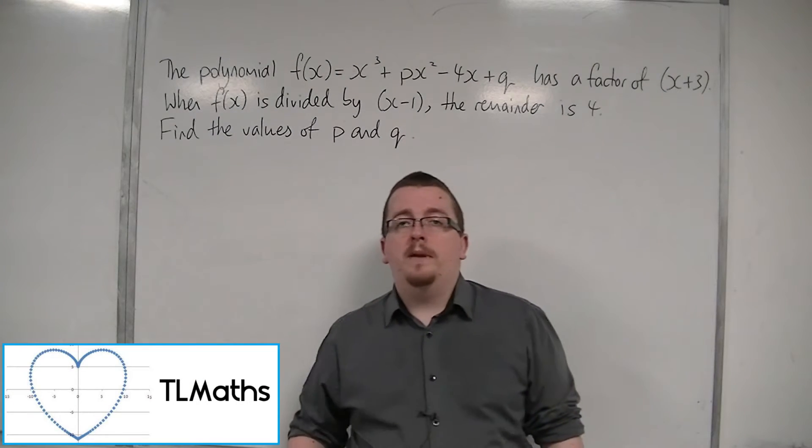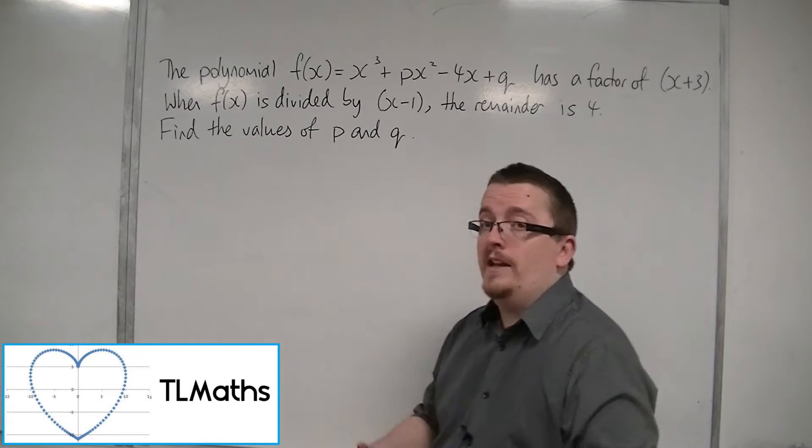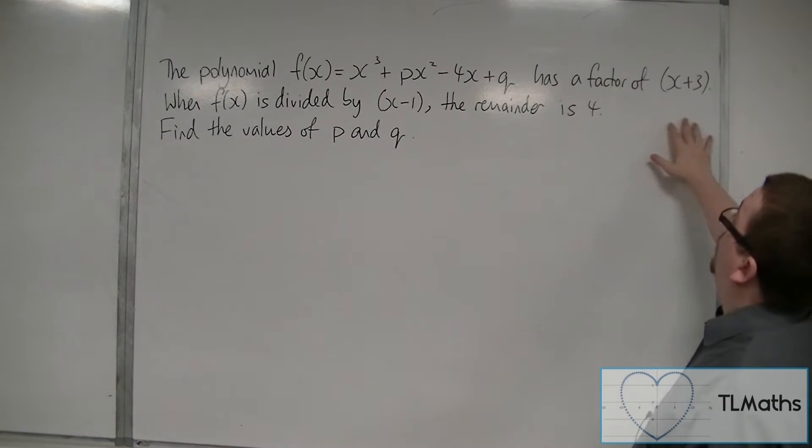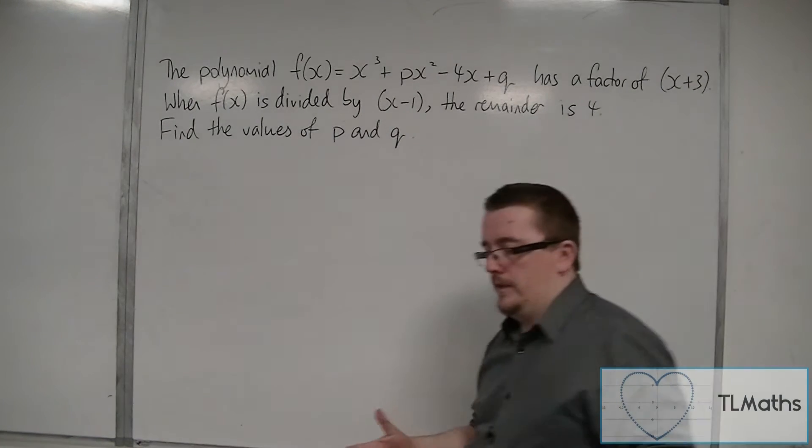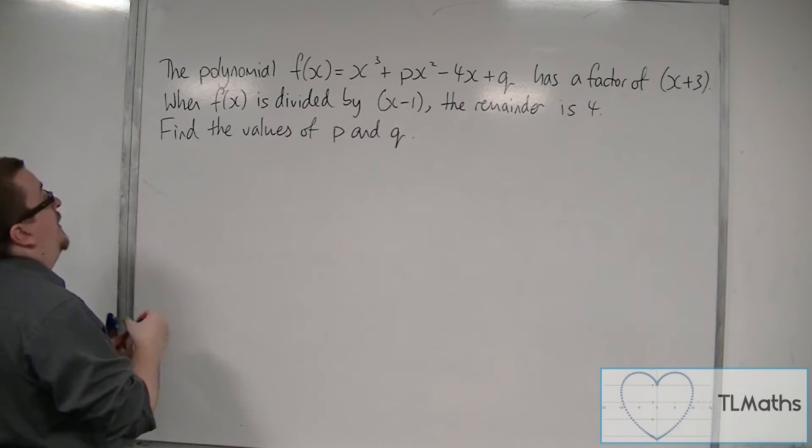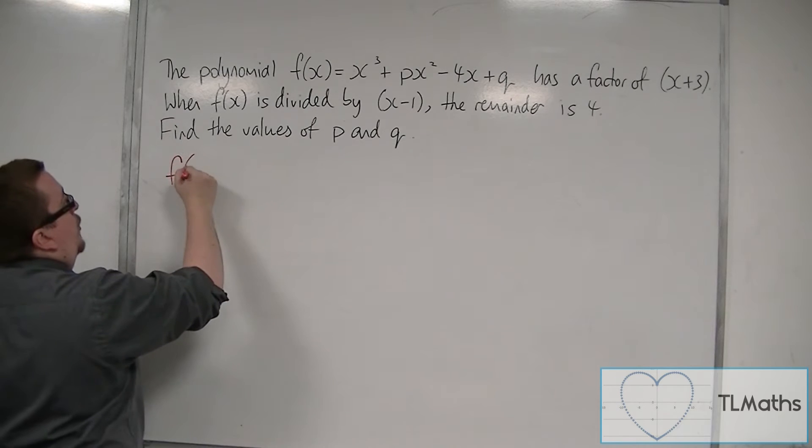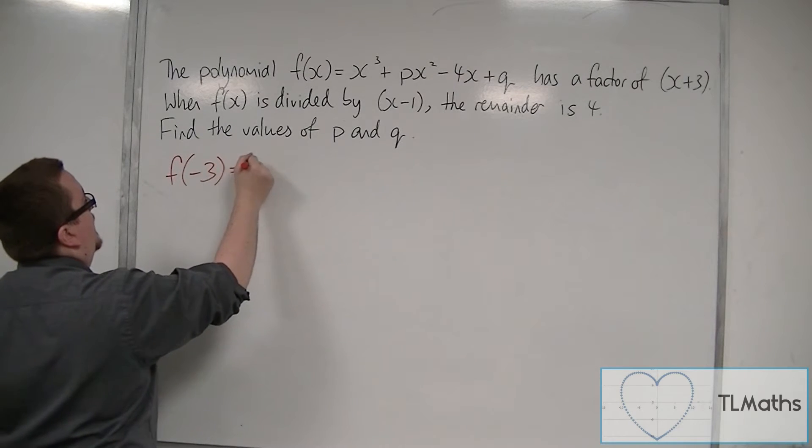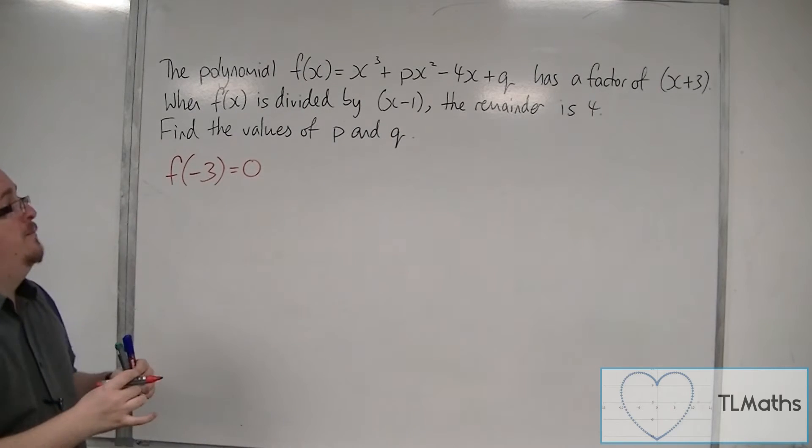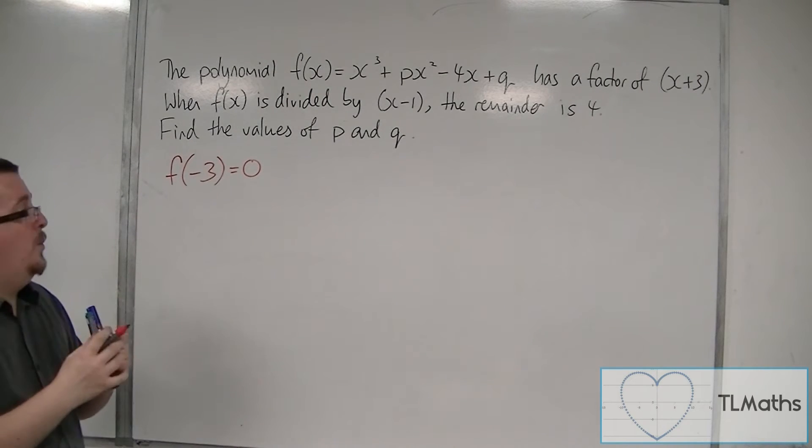This problem involves both the factor theorem and the remainder theorem. The polynomial f(x) has a factor of x plus 3, so just reading that top line, we can say that f of minus 3 will be equal to 0. And from that bit of information, we can then form an equation.